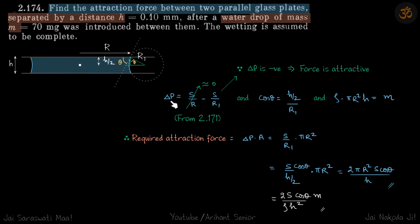This gives delta P inside is minus S/R1. This negative sign means the force is attractive because delta P is negative. Now second equation, just like in the previous problem, cos theta...